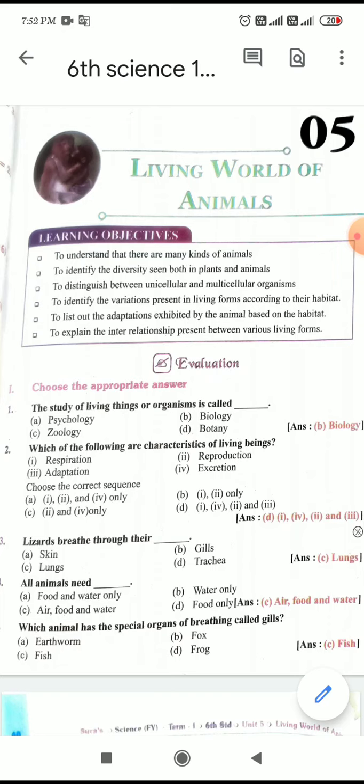First question: The study of living things or organism is called biology. Second question: Which of these followings are characteristic of living beings? The answer is D: Respiration, adaptation, excretion and reproduction.